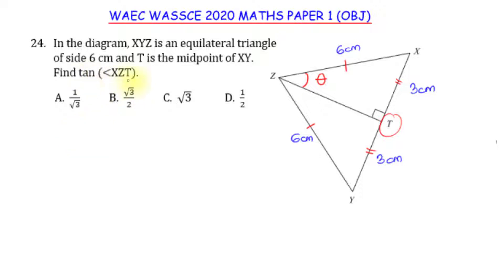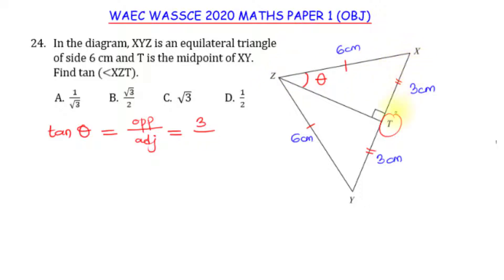To get tan theta, from SOHCAHTOA, tan is opposite over adjacent. For this question, the opposite is 3. But we don't know the adjacent side — the longer side is the hypotenuse, the side facing the angle is the opposite, and this third side is the adjacent. Let's call that X, so tan theta = 3 over X.